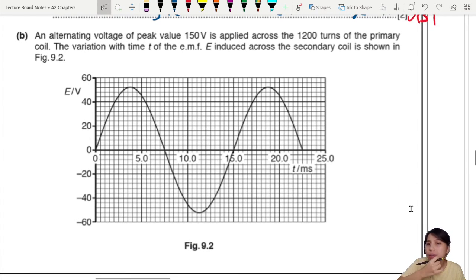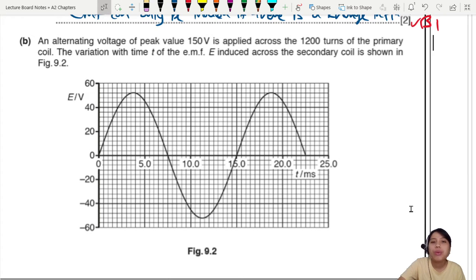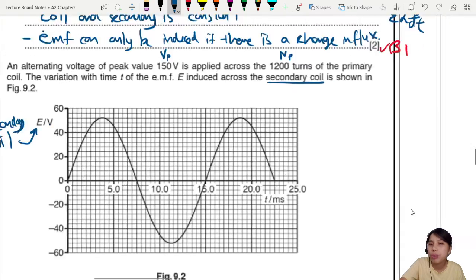Now they give us a graph. An alternating voltage of peak value 150V is applied in the primary coil. They show us the secondary coil EMF down here in this diagram. Oh, I smell a calculation coming.